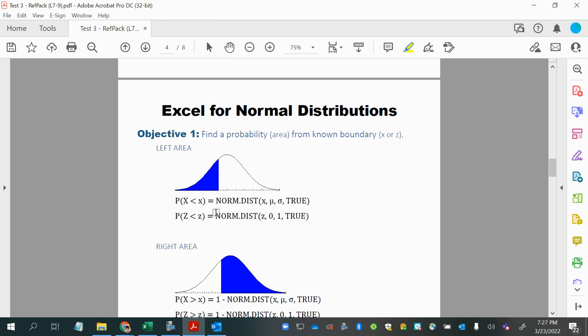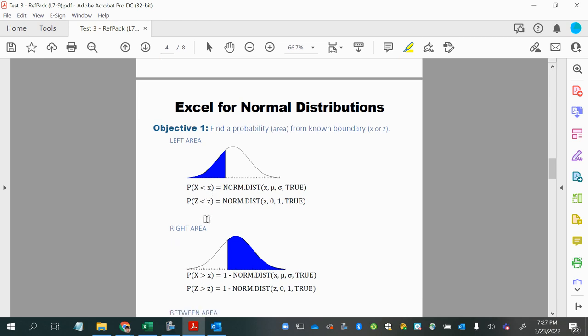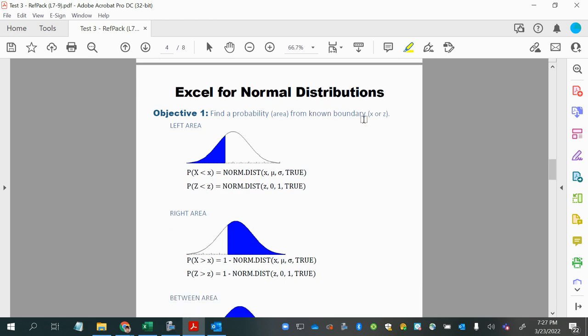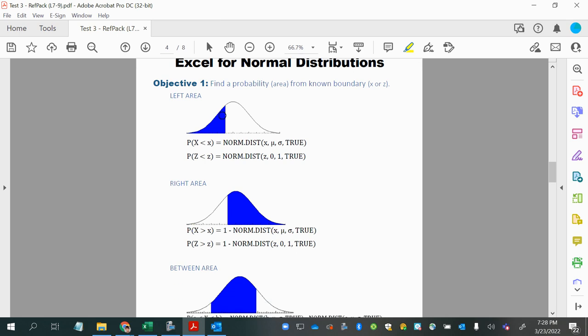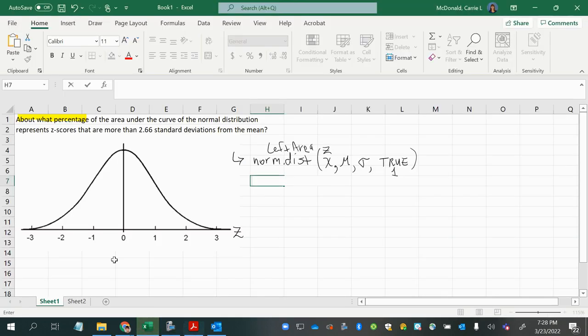You have for Objective 1 when you're finding a probability area from a known boundary or boundaries, you'll usually be doing one of these three scenarios or some combination of them. And so here we need to start sketching this out to know which scenario we have.